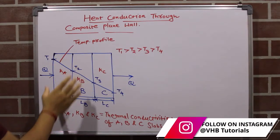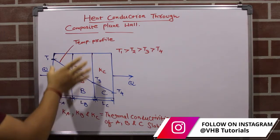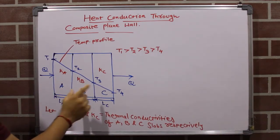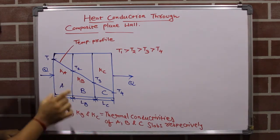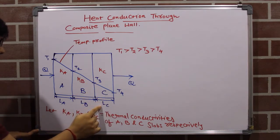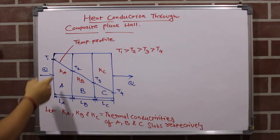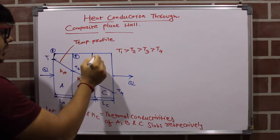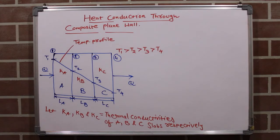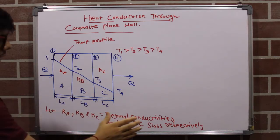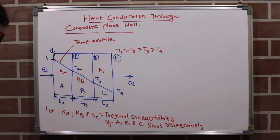This is the combination of plane walls or plane slabs in series combination. The walls are in series — let's say the first wall is A, the second is B, and the third is C. The thickness of wall A is La, thickness of wall B is Lb, and thickness of wall C is Lc. The temperatures at the four interfaces are T1, T2, T3, and T4 respectively. Ka, Kb, and Kc are the thermal conductivities of slabs A, B, and C respectively.